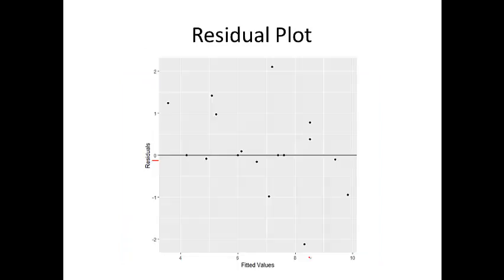We want the residual plot to be like this one — there is no particular pattern in the residual plot. This is the criteria to evaluate which residual plot is good and which is problematic. The next question is: how can we draw a residual plot in the R software? I want to use an example to show you.